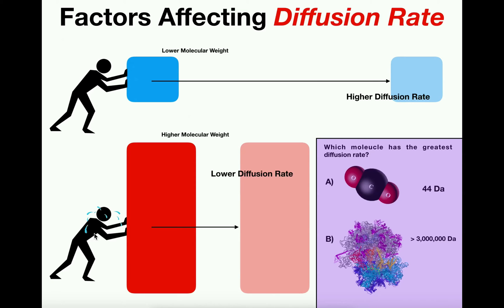Remember what diffusion is. Diffusion is the movement of particles, such as ions or small molecules, from an area of high concentration to an area of low concentration. When we talk about diffusion rate, if the diffusion rate is higher, that movement of those particles is faster. If the diffusion rate is slower, then that movement from high to low concentration is slower.